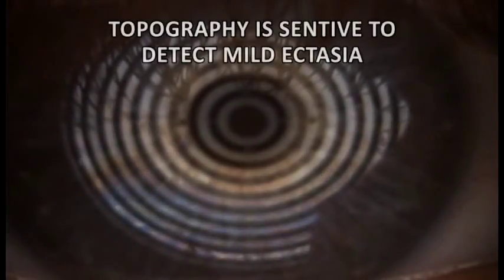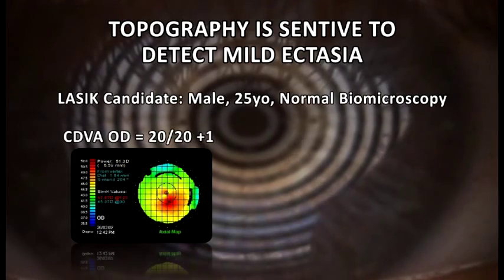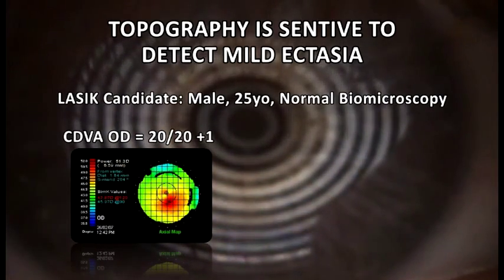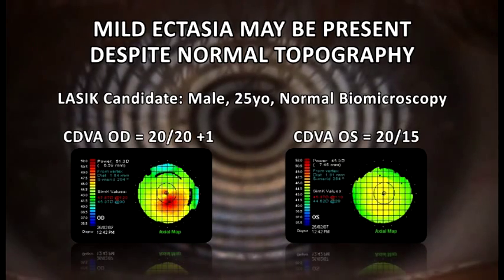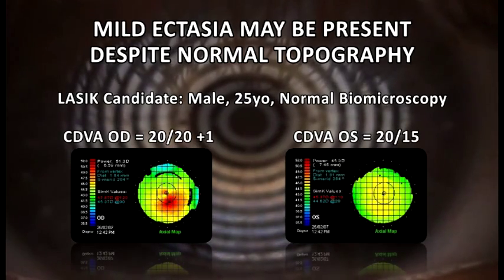Even though corneal topography is sensitive to detect mild ectasia prior to other clinical signs, it is well established that very mild ectasia may be present despite normal front curvature maps.